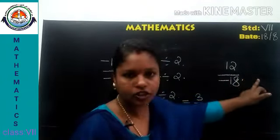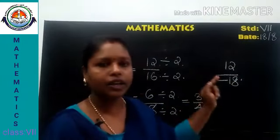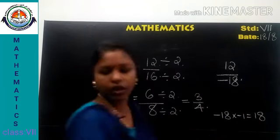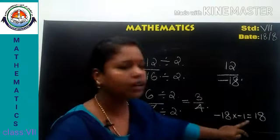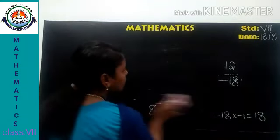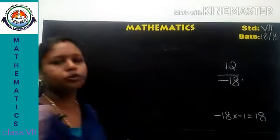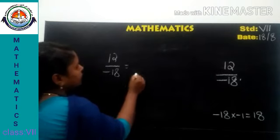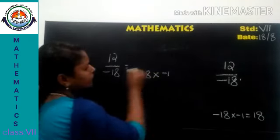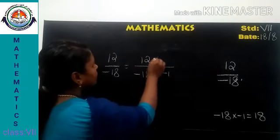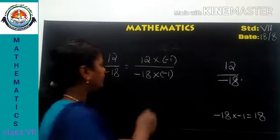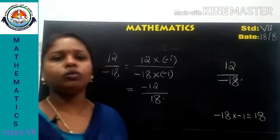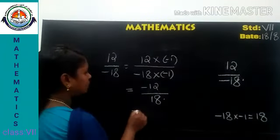To remove the negative sign from the denominator, we multiply by negative 1. Negative 18 multiplied by negative 1 equals 18. But if we do any operation on the denominator, we must do the same to the numerator. So for 12 by negative 18, we multiply both numerator and denominator by negative 1: this gives negative 12 by 18. Then we can remove the common factors.